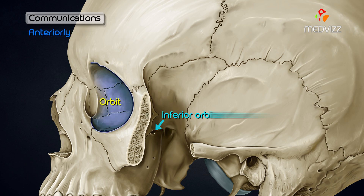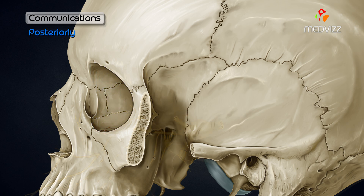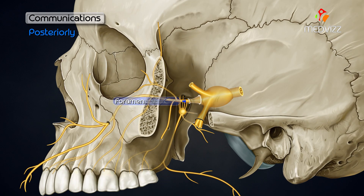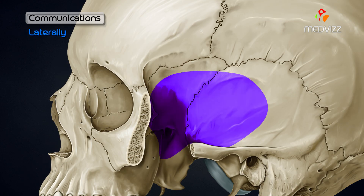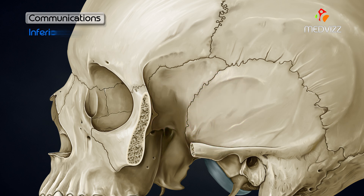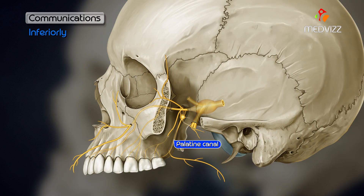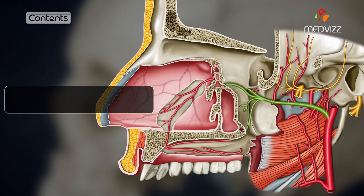Communications: anteriorly, it communicates with the orbit through the medial end of the inferior orbital fissure; posteriorly, with the middle cranial fossa through the foramen rotundum, and with the foramen lacerum through the pterygoid canal; with the pharynx through the palatovaginal canal; and medially with the nose through the sphenopalatine foramen.